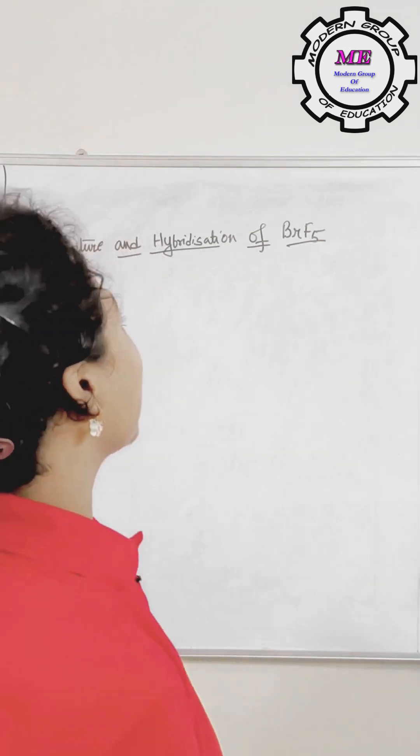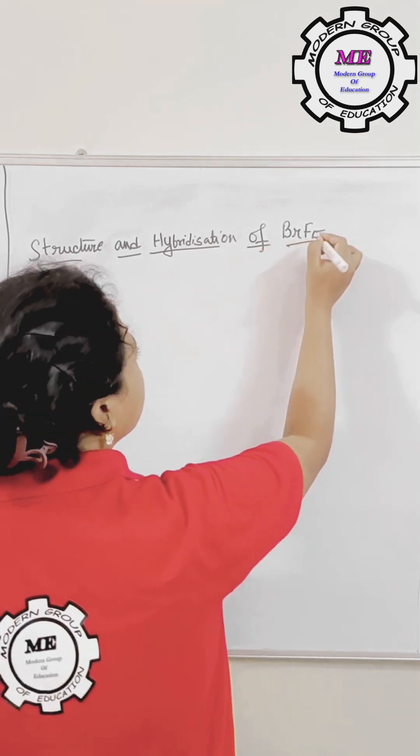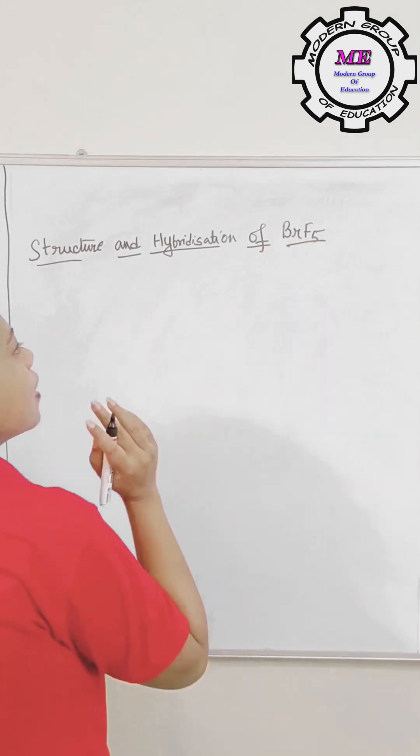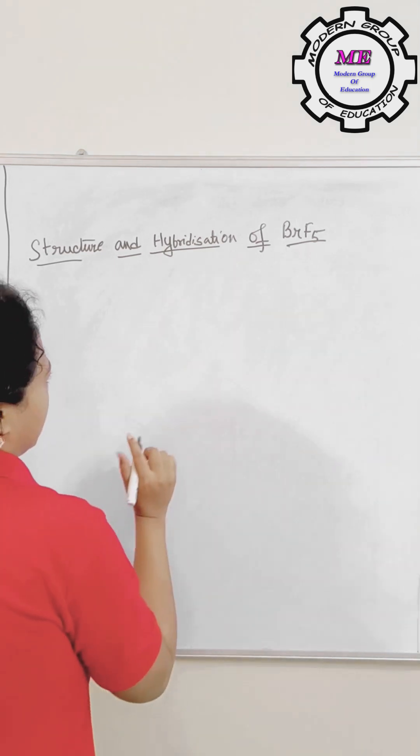Hello students, so today we will be looking at the structure and hybridization of BRF5. First of all, you have to calculate all the valence electrons. For detailed video you can consult our videos as well of structure and hybridization.